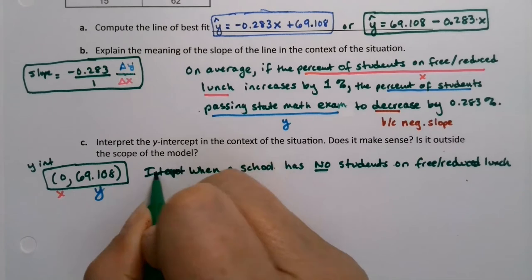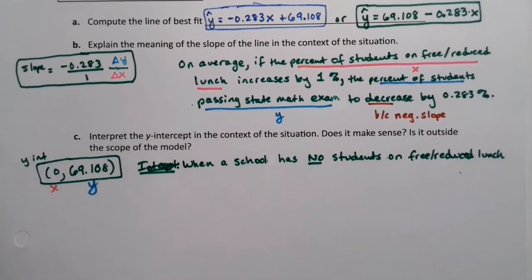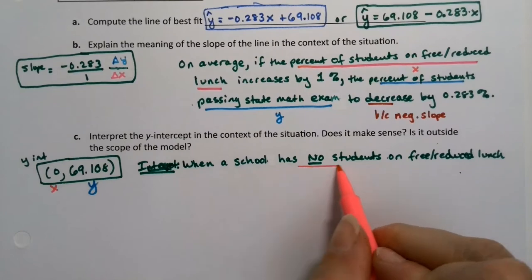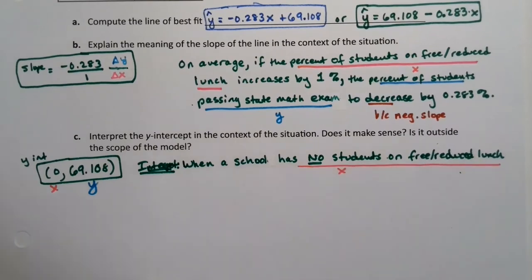So I'm going to label this. This is the interpret part. So when a school has no students on free or reduced lunch, that's x is 0. That's x. That's what I'm interpreting right there. So when x is 0,